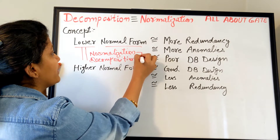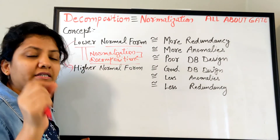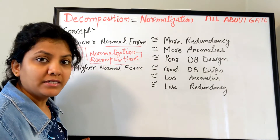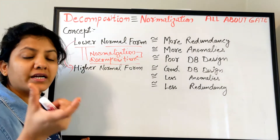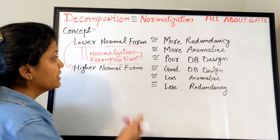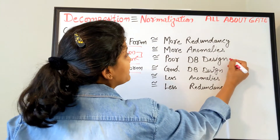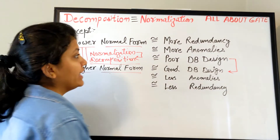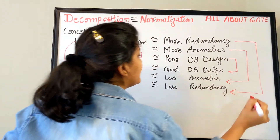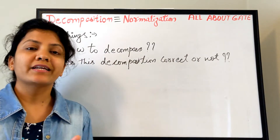For performing this normalization, what we are actually going to do is decompose the lower normal form into multiple tables. The table which is in the lower normal form will be decomposed or divided into two or more tables which are supposed to have the higher normal form — more normalized. Accordingly, if a relation has a higher normal form, the poor database design becomes a good database design, more anomalies become fewer anomalies, and more redundancy turns out to be less redundancy.